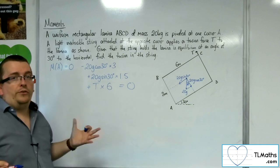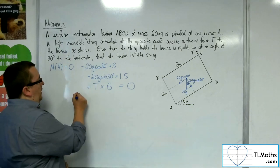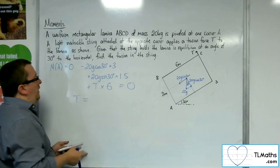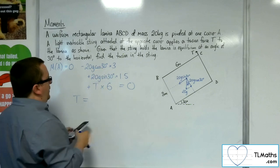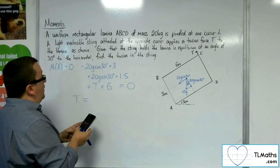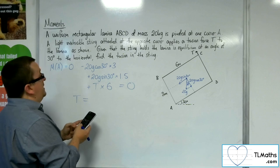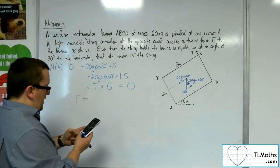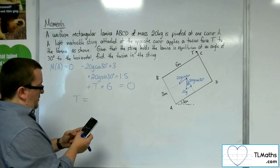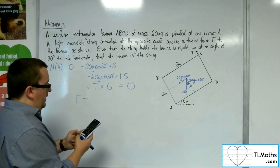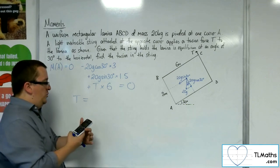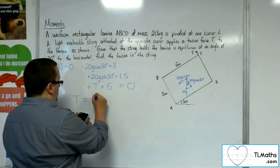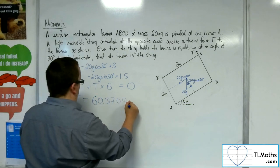So this gives me an equation that's got T, T's the only unknown. So if I add the 20G cosine 30 times 3 to both sides, so 20 times 9.8 times cosine 30 times by 3 is 509.222. I've got to take away 20 lots of G times sine 30 times 1.5, so that gets me 362.222, and then I need to divide that by 6. And so T is 60.3704, so 60 newtons to two significant figures.